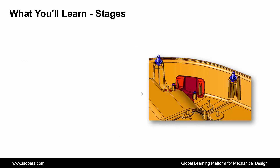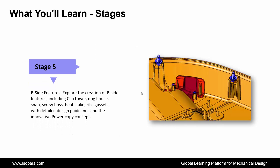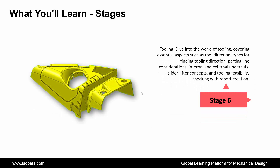Fifth is B-Side Features: explore the creation of B-side features, including clip tower, dog house, snap, screw boss, heat stake, ribs, and gussets, with detailed design guidelines and the innovative power copy concept.